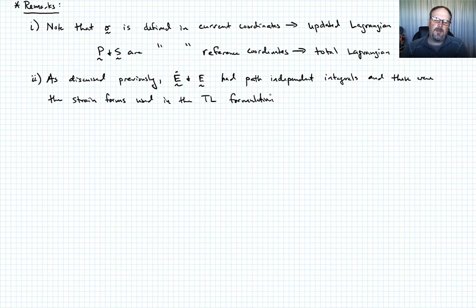So because of that, these are going to be particularly convenient to use for path independent nonlinear materials. So because that was our strain measure that was path independent, then we typically are going to use P and S. So we want to use those, or if we use those, it's very convenient for path independent nonlinear materials.